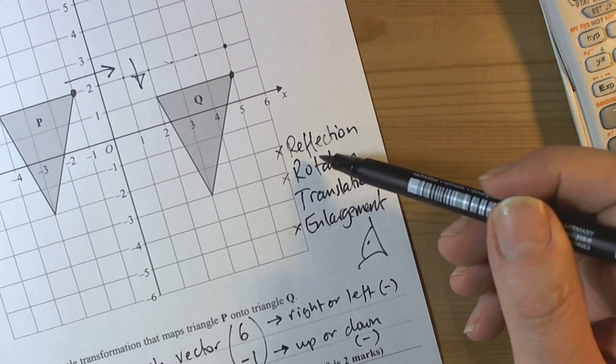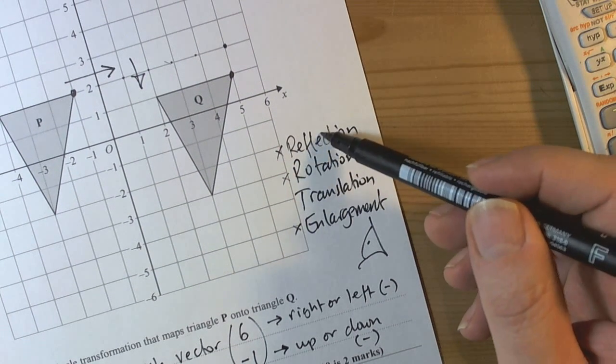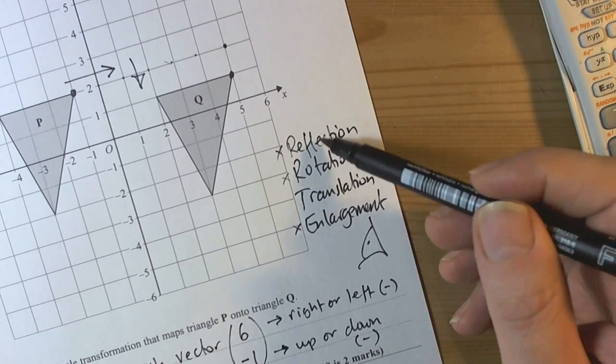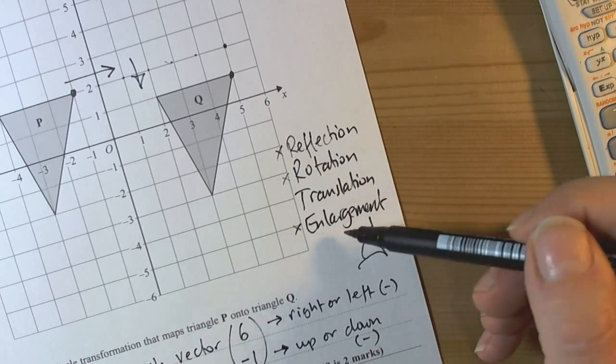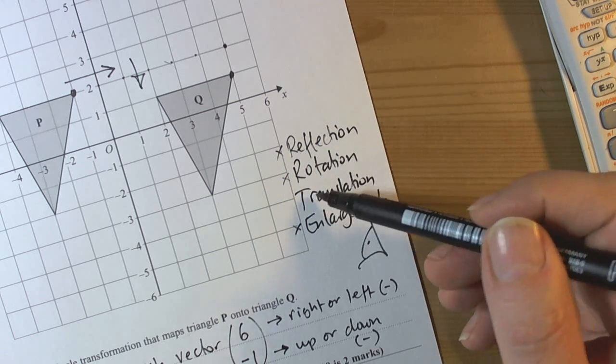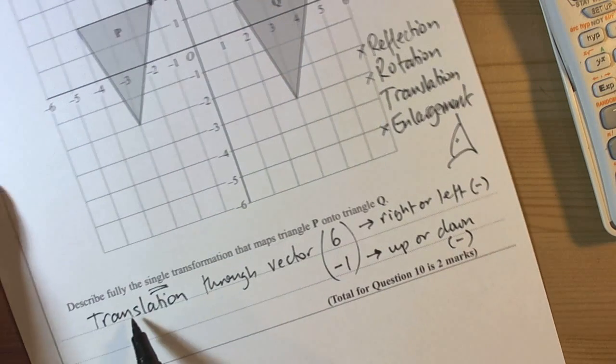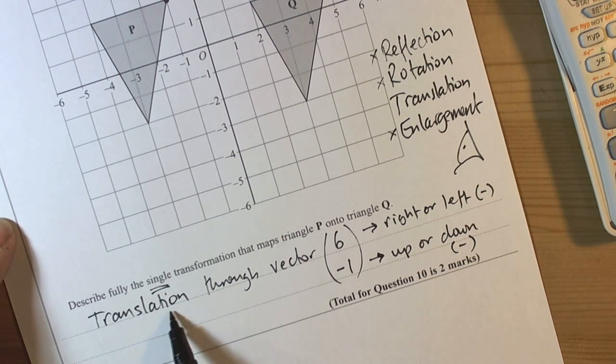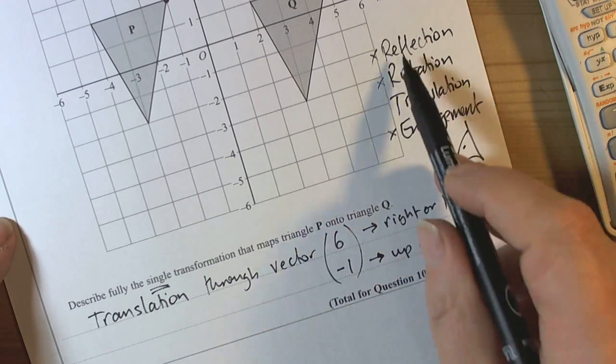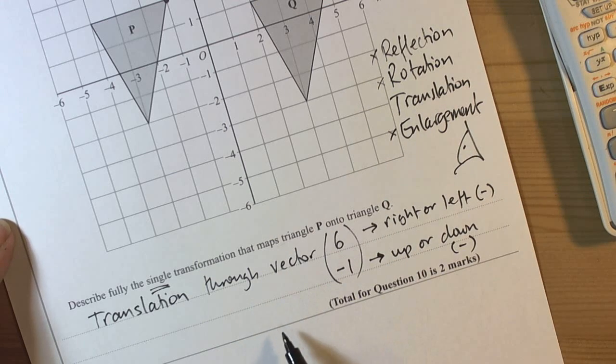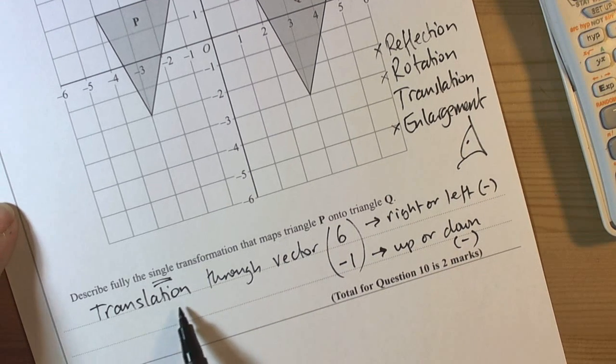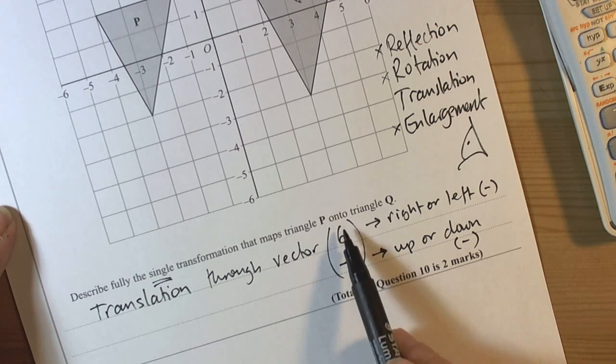Again, it's always worthwhile writing down the four transformations possible, going through each one logically and asking yourself can it be that, can it be that, and then concluding which one it is. Single means do write down one of those words only. Don't ever mention the other ones otherwise you get zero marks on this question. And then recognize that with a translation we do need to have a vector as well.